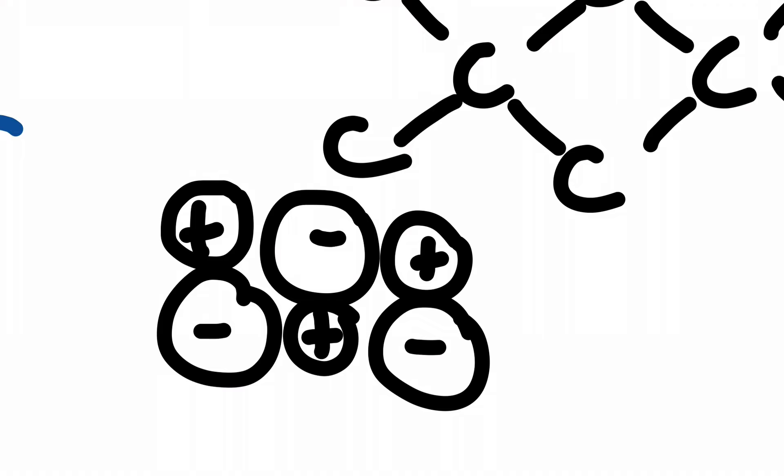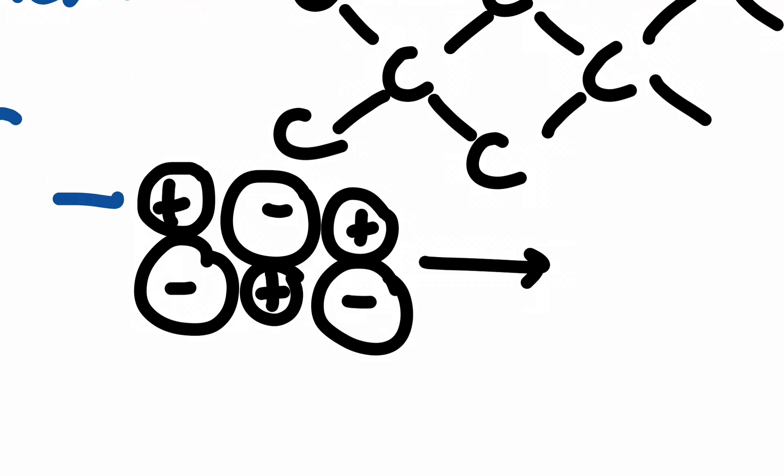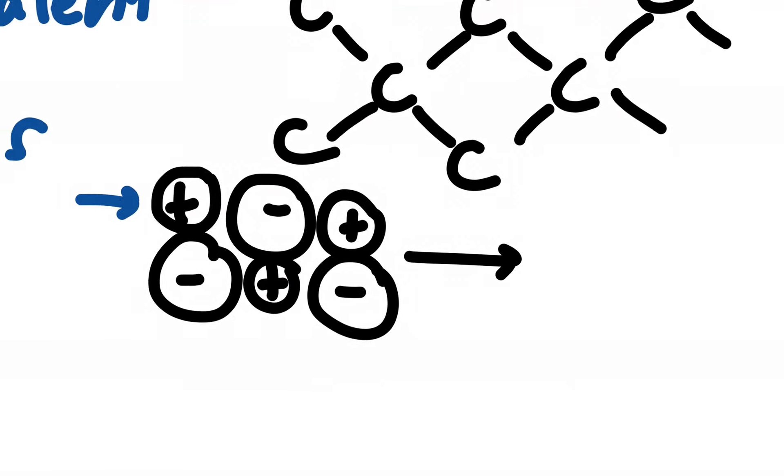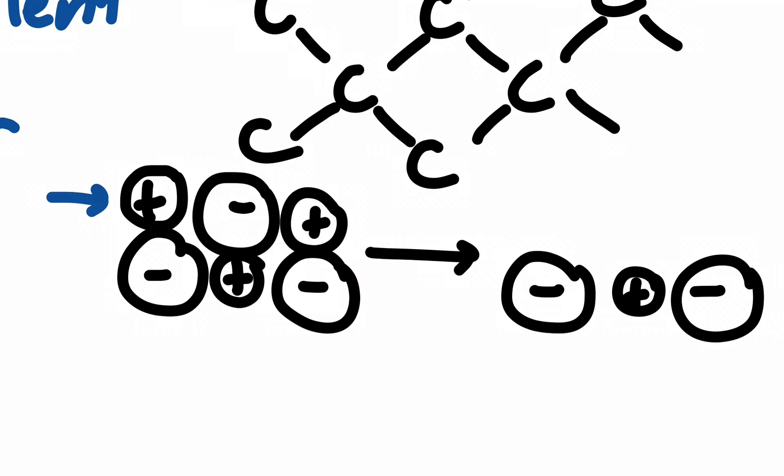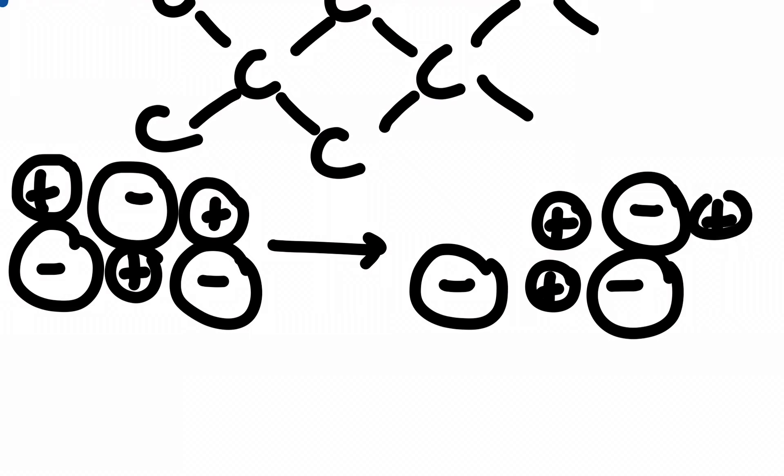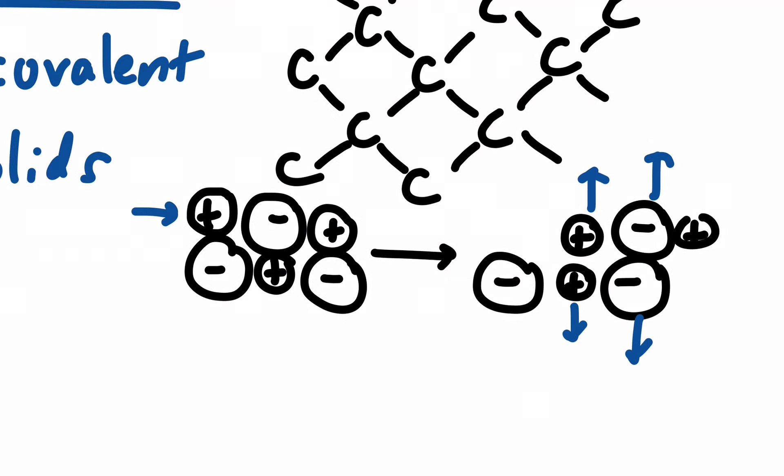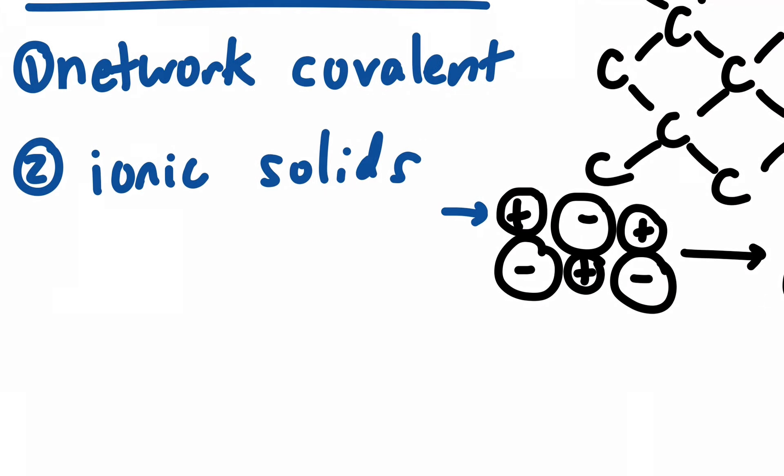This also shows why if you try to break ionic solids, you'll actually force a layer of these ions to shift. And you would end up getting, let's say one layer stayed the same, but now the other layer is shifted. And as a result, you would have a series of positive charges next to each other and negative charges next to each other, and it would break apart. That's why ionic substances are brittle. It's because of that arrangement that happens when you force that damage.